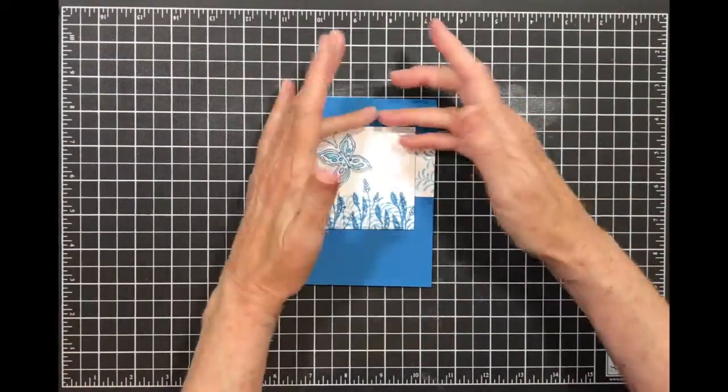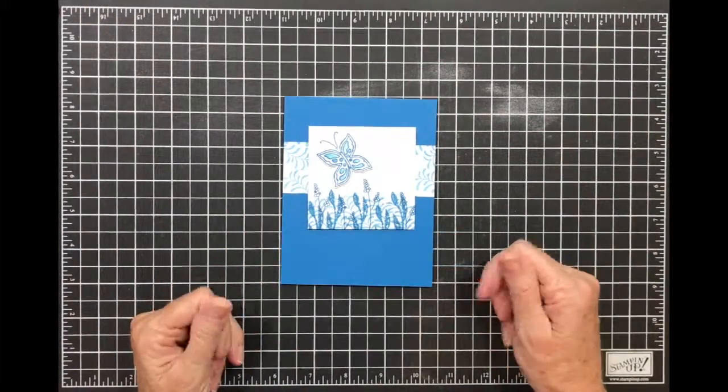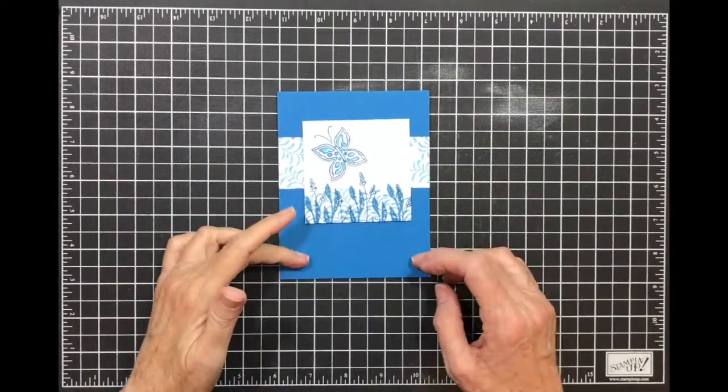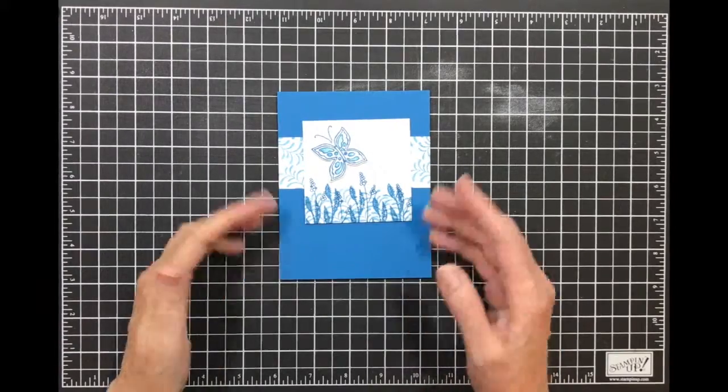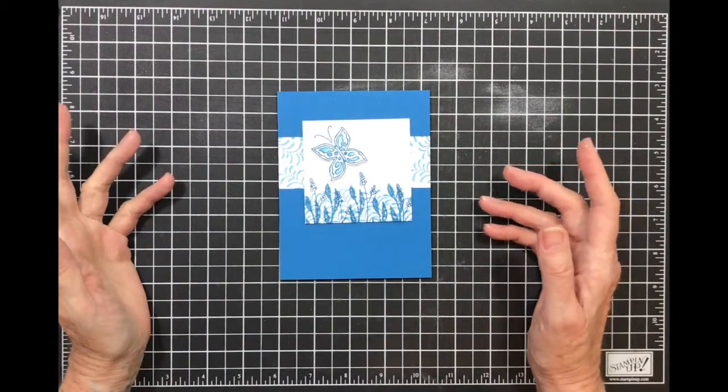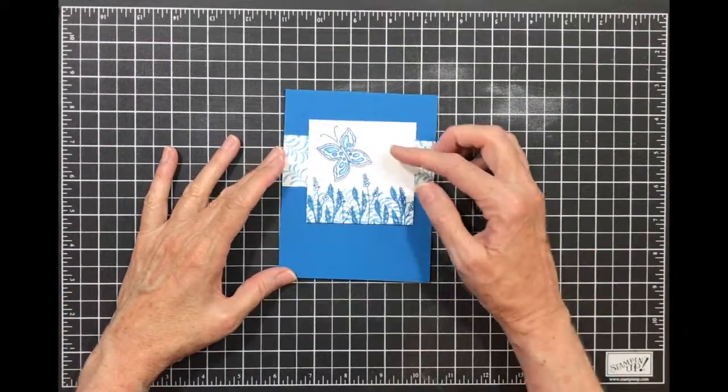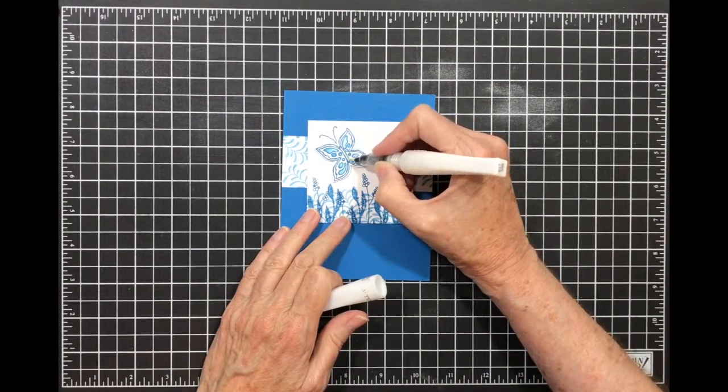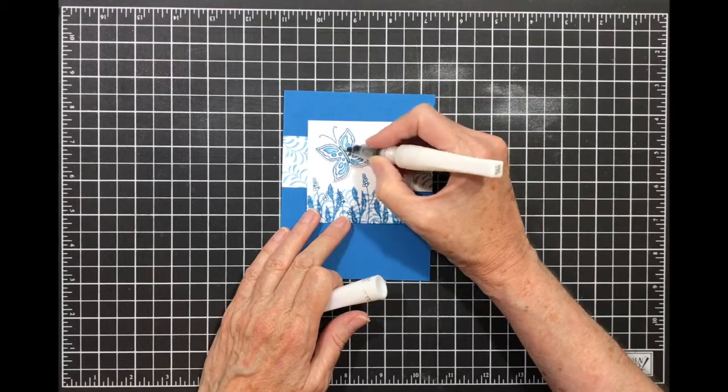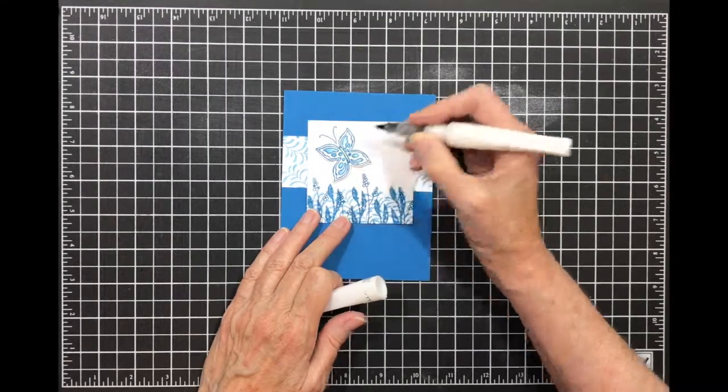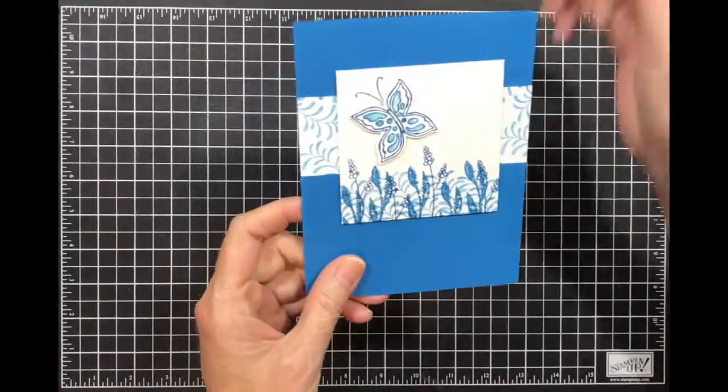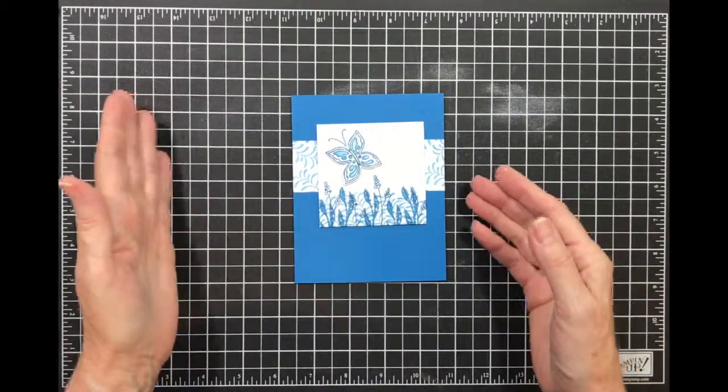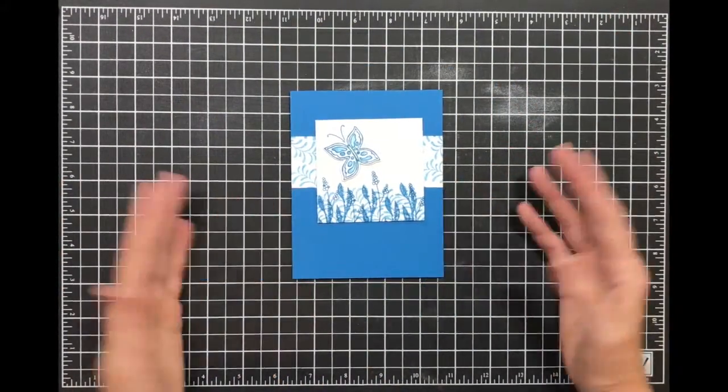Now if you want to step this up a notch you can emboss this background. The layered leaves would look really nice with it. You could do a panel of the Pacific Point embossed on a white card, so lots of different ways you can step it up. I like my bling so I'm going to add some bling, some Wink of Stella to the body. What happens with Wink of Stella is it causes the blue to bleed a little but that's fine because it gives it another color. And there we have it.